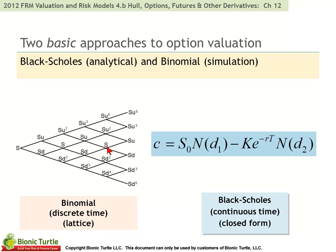It's also called a lattice, and notice it operates in discrete time — we take a discrete step, a discrete step, a discrete step. Hull introduces binomial first, and I think it's very natural because in a way the binomial is a real general case. We have a lot of flexibility in the assumptions — not only how many steps we want this tree to be, but also other structural choices.